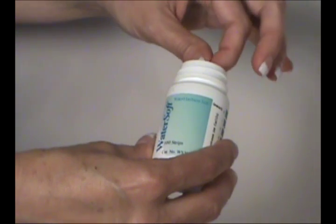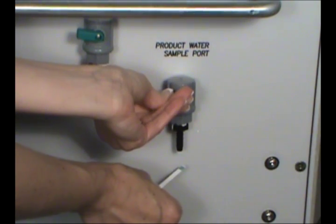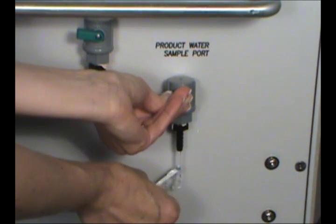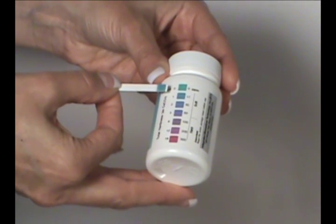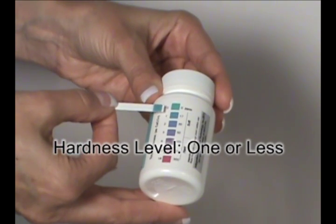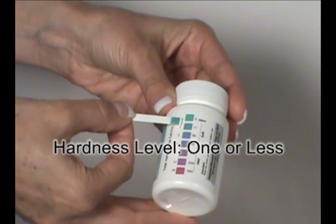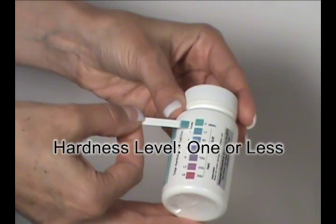Remove a water hardness test strip from the container. Wet the sample test strip from the product water sample port. Compare the color test result on the side of the container. The hardness level should be one or less. If the hardness level is not satisfactory, contact AmeriWater.